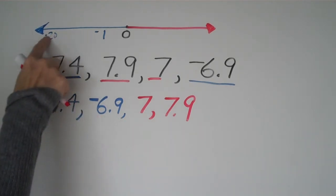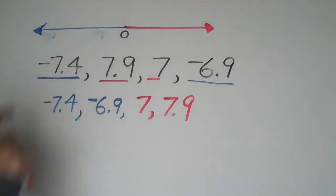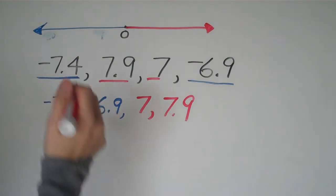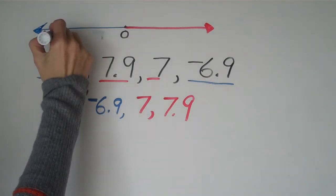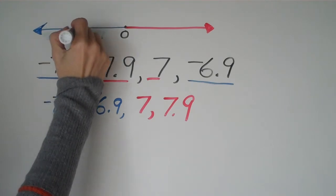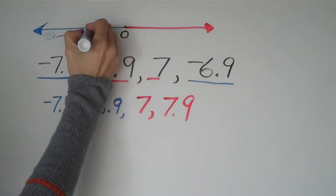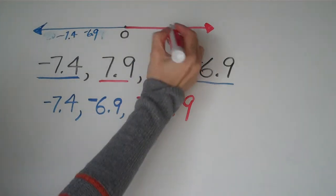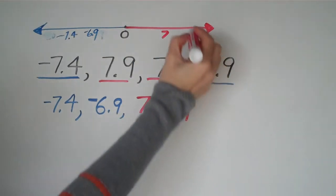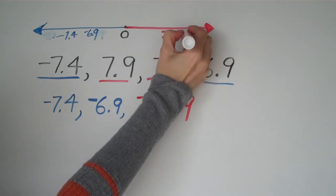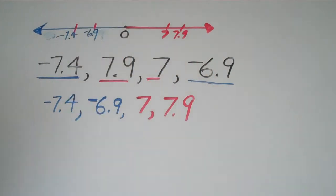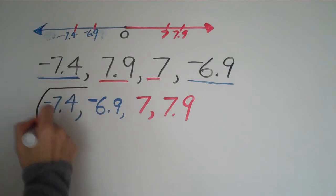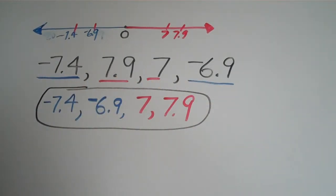If you plotted these on a number line, negative 7.4 would be furthest left, then negative 6.9, then positive 7, then positive 7.9 furthest right. That's what it looks like on the number line — one simple example of ordering from least to greatest.